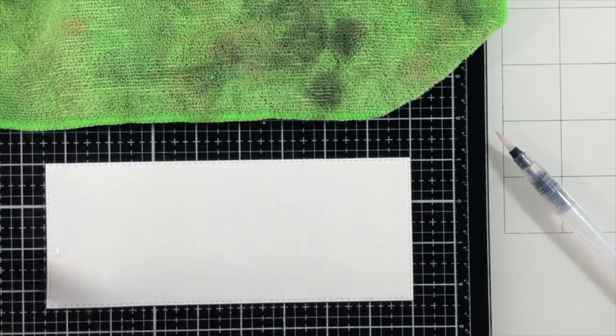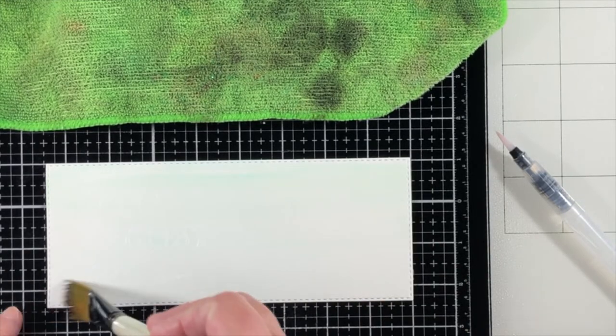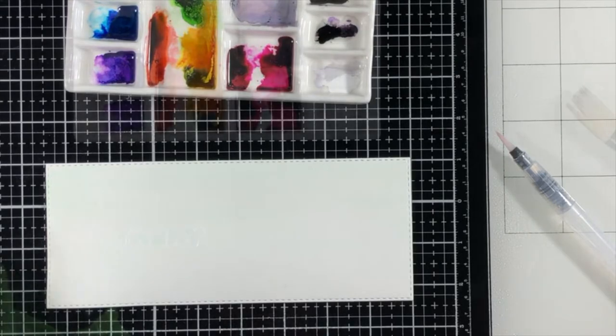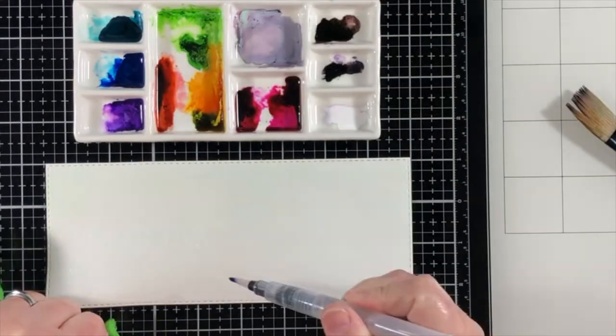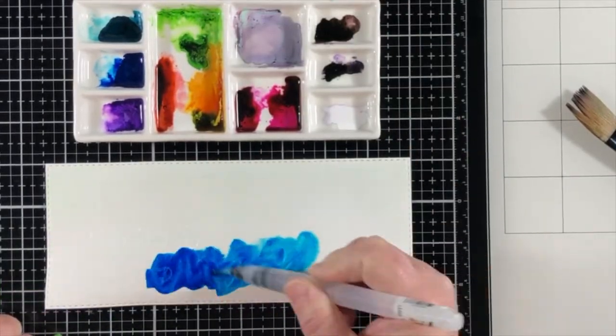And I added some sprinkled white embossing powder and heat set that. So now we're at the point to where we're going to do the emboss resist technique with some watercoloring.